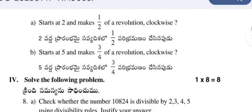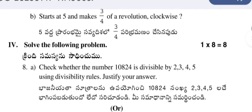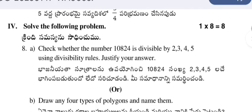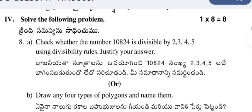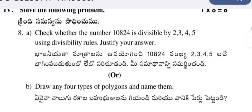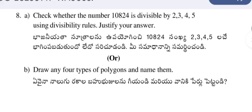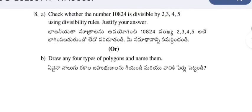B: starts at 5 and makes 3/4 of a revolution in clockwise direction. Next, the fourth question 8a: check whether the number 10824 is divisible by 2, 3, 4 by using divisibility rules. Justify your answer.